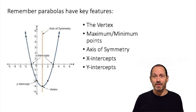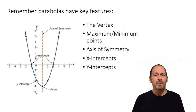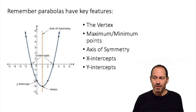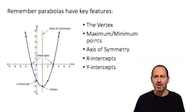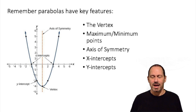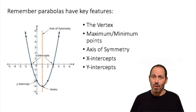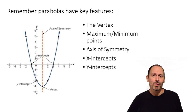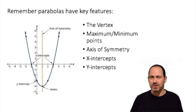Welcome to part two of graphing quadratic functions. Remember that parabolas have key features: the vertex, the maximum and minimum points, axis of symmetry, x-intercepts and y-intercepts. We went over all these items in the prior video. So moving forward, we're going to see what happens in a different situation.